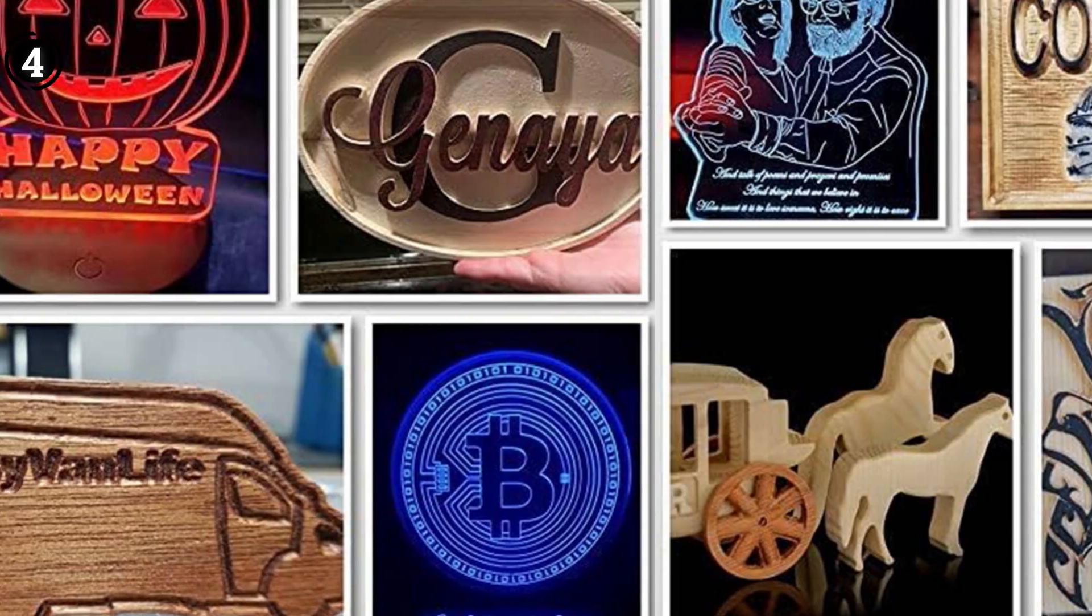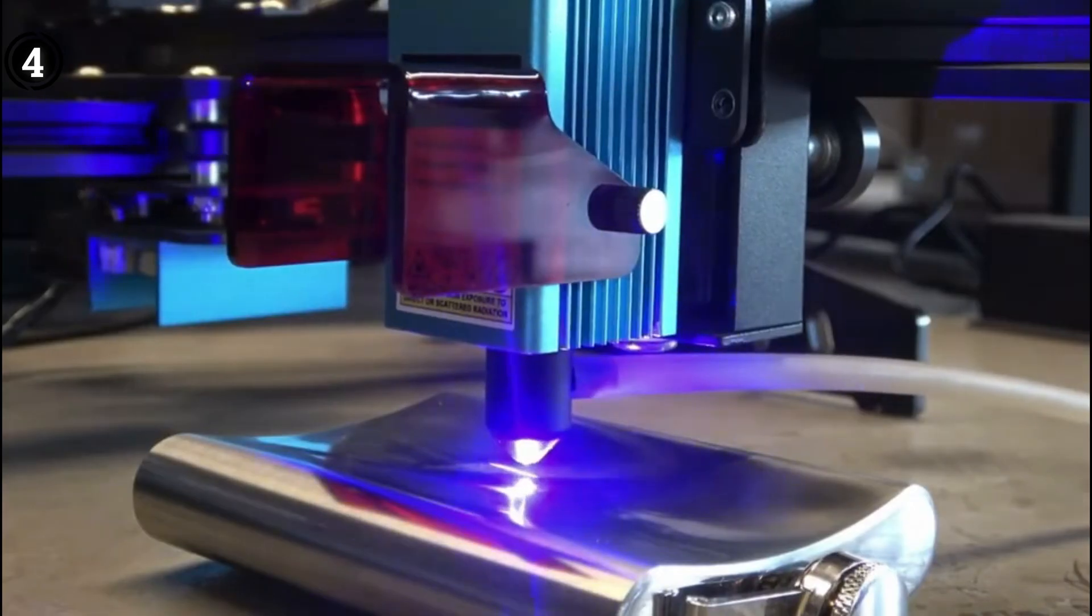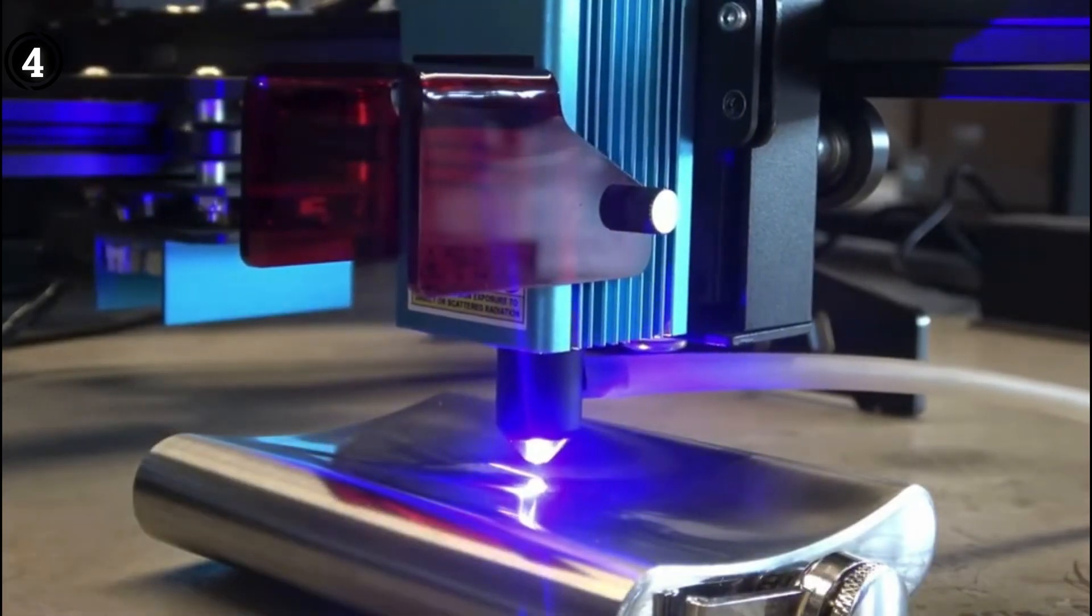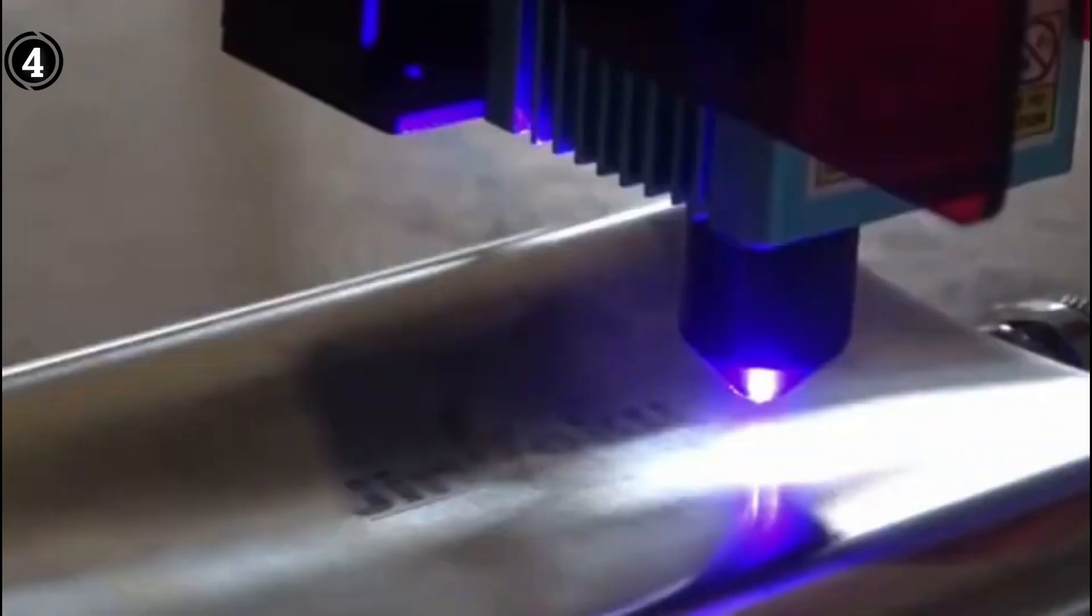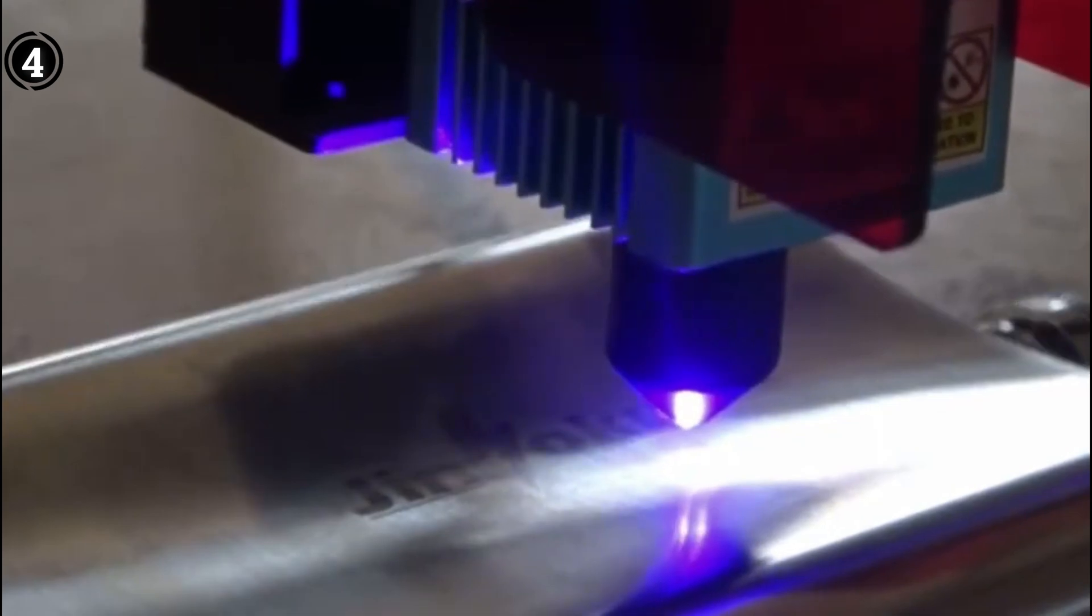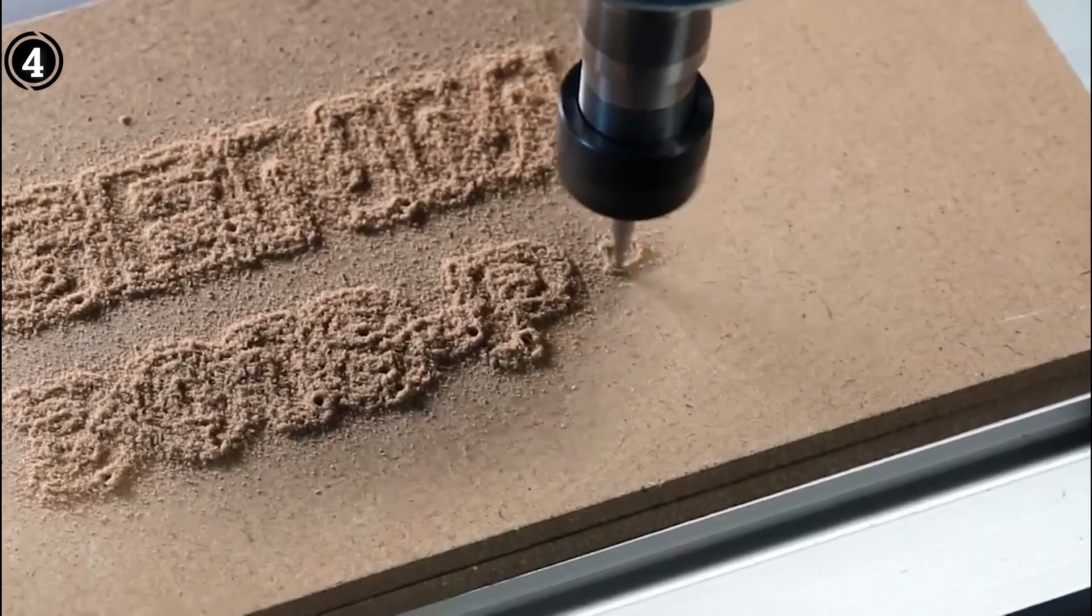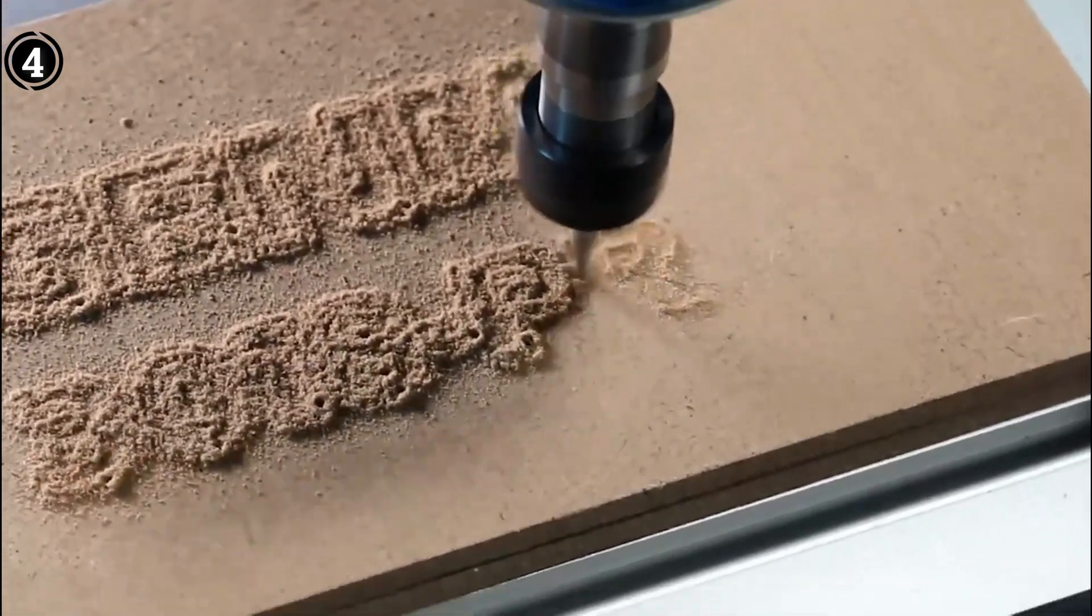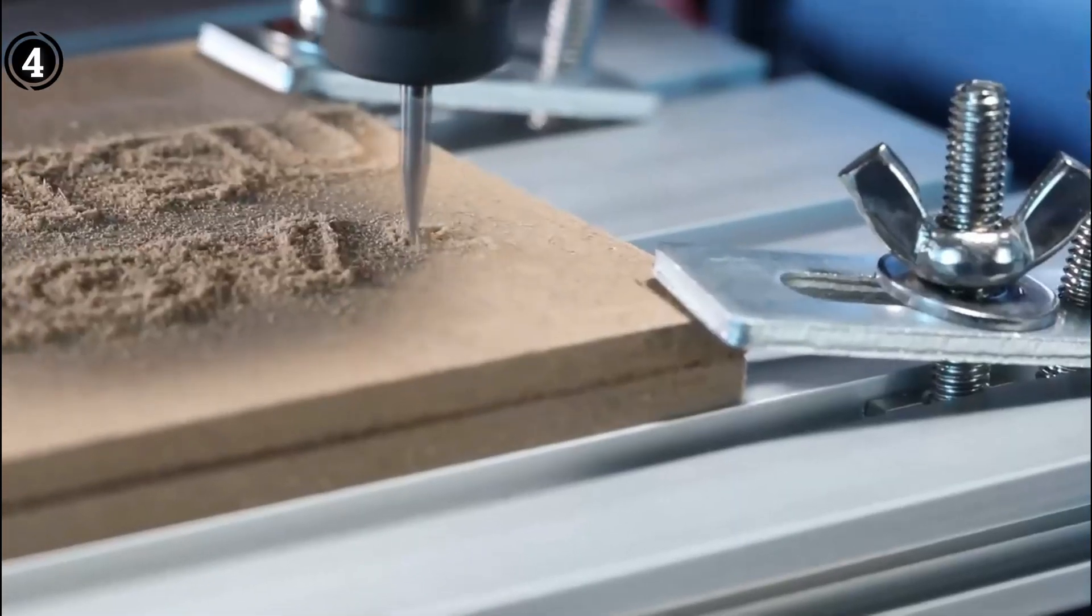In conclusion, the SaneSmart GenMitsu 3018 Prover is a fantastic CNC router for beginners. Its ease of assembly, robust features, stability, and compatibility with a variety of materials make it an ideal choice for those looking to explore CNC woodworking without being overwhelmed by complexity.